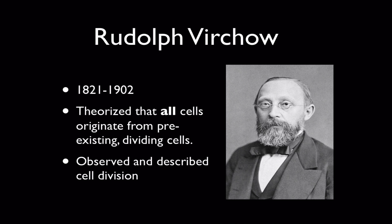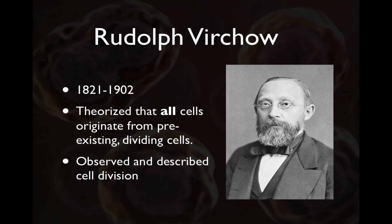Finally, Rudolf Virchow, 1821 to 1902 — again solidly in the 19th century, though he slightly made it into the 20th. He read about the work of Schleiden and Schwann, and he studied cells. He noticed that cells divided — when you watch a living cell, cells have the ability to split in two, so one cell can become two cells. He discovered what we now know as cell division, and theorized that all cells — including those of plants and animals — come from pre-existing cells that divide.